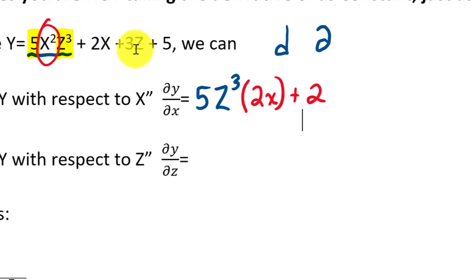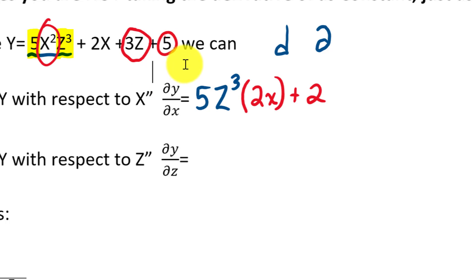Now the next term, 3z: we're treating everything that's not an x like it's a constant, just like the number 5. So 3z has no x in it. What's the derivative of 5 with respect to x? It's 0. Therefore, the derivative of 3z with respect to x is also 0. If it doesn't have an x in it, we don't include it in our derivative — it doesn't affect the rate of change when we change x.